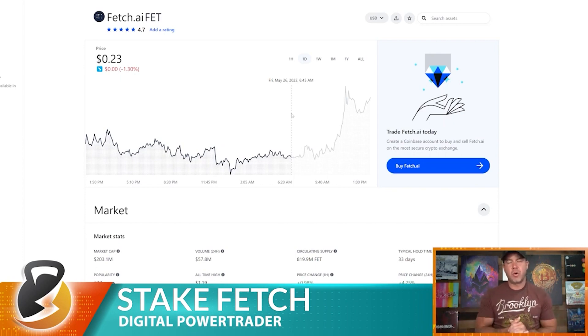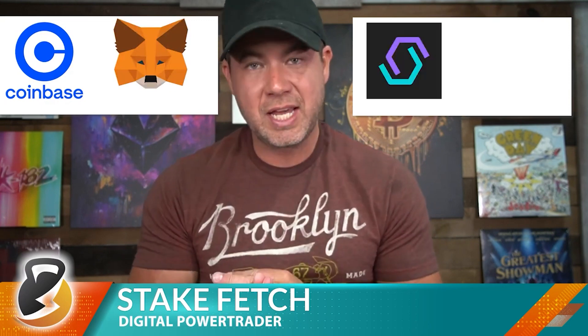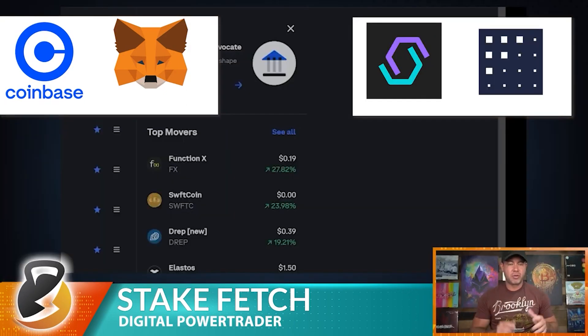We'll walk through the full process: how to stake your Fetch on Cosmo Station and then get it back off so you can sell or liquidate it on an exchange, MetaMask, or wherever you want. To do this you'll need three things: a MetaMask wallet, a Cosmo Station wallet and account, and a Fetch wallet.